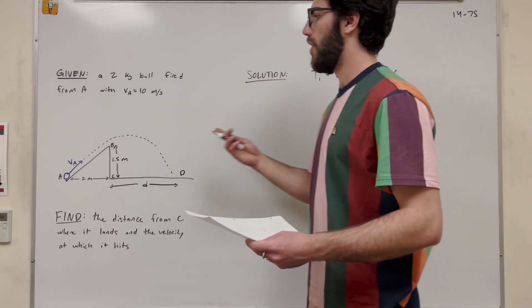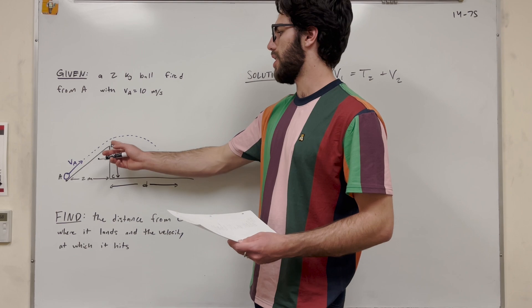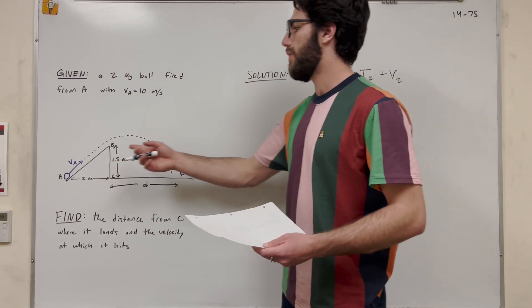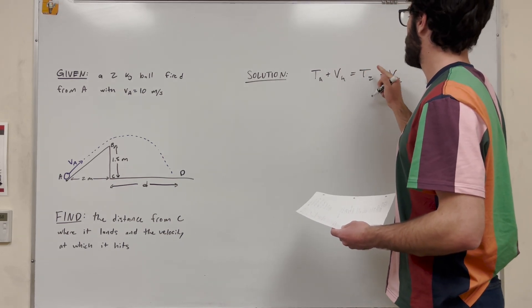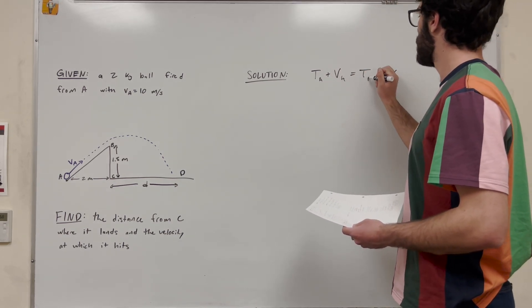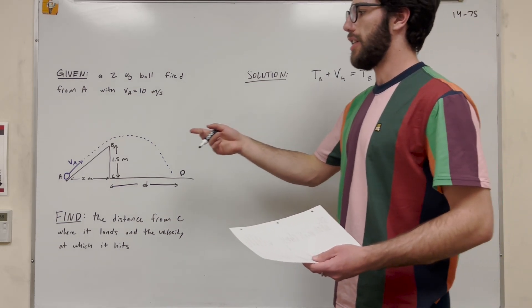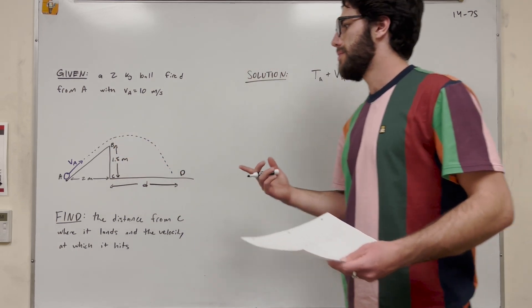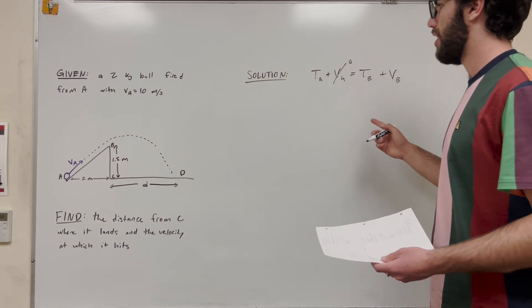Well, how about we try to find, first of all, the velocity which it leaves B? Because if we find the velocity of B, then it's just a kinematics problem to find how far it travels. So we're going from A to B. So we have initial kinetic energy, because we're moving with a velocity. But we're starting at a low point, and we're going up a hill. So we're going to say that we have no initial potential energy, but we have final potential energy.